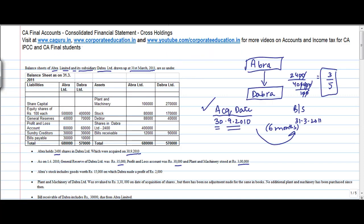Now, let me go back. Abra stock includes goods worth Rs. 15,000, on which Dabra made a profit of 2,000. Plant and machinery of Dabra Limited was revalued to rupees 3,30,000 on date of acquisition of shares but there has been no adjustment for the same in the books of accounts. So on the acquisition date my plant and machinery was 3,30,000 but there was no adjustment which was done. No additional plant and machinery has been purchased since then. Bill receivable of Dabra Limited includes 30,000 due from Abra Limited.